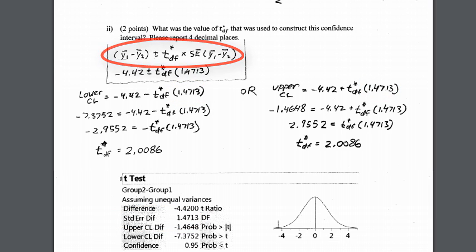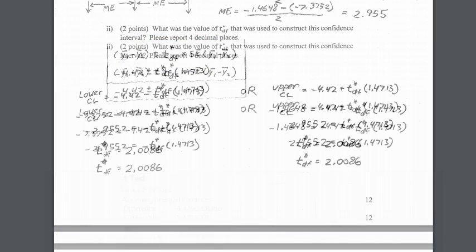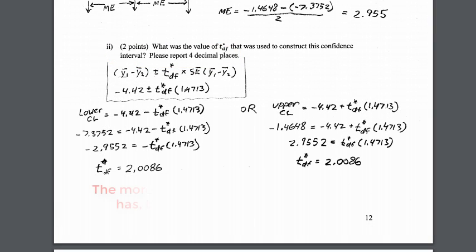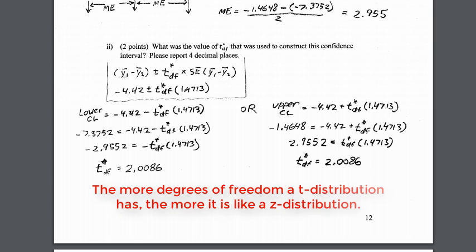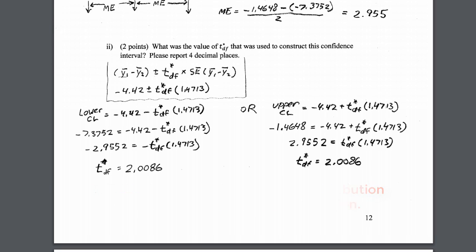Although we don't know the t-statistic, we can figure it out. One important thing to note is that this is a 95% confidence interval. Although we didn't give you the sample size, if the sample size is large, it will be closer to 1.96.